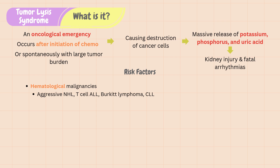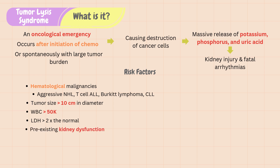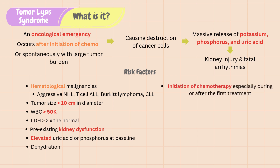Patients with large tumor burdens are also at risk for TLS — for example, tumor size of more than 10 centimeters in diameter, WBC count of more than 50,000, and/or LDH level two times the upper limit of normal before treatment. If patients already have pre-existing kidney dysfunction, elevated uric acid or phosphorus at baseline, or dehydration before the start of chemotherapy, they are also at risk. Most TLS occurs due to initiation of chemotherapy, especially during or after the first treatment.